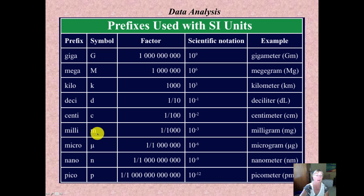we use milli all the time, sometimes centi, and sometimes kilo. Most of those others, like micro and nano and giga, we don't use too much.